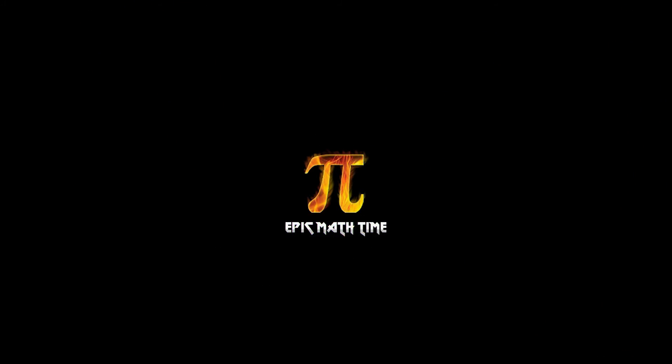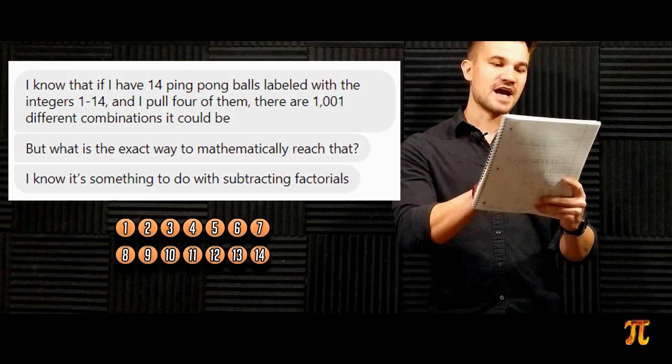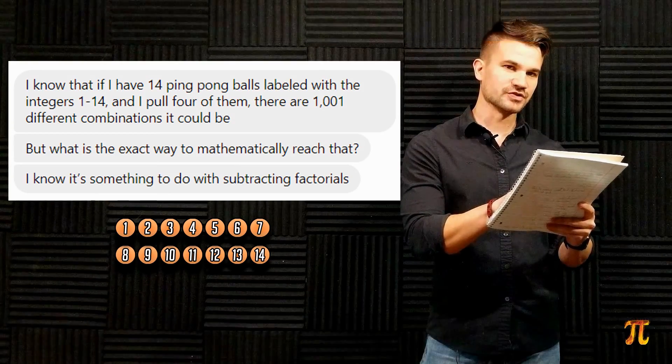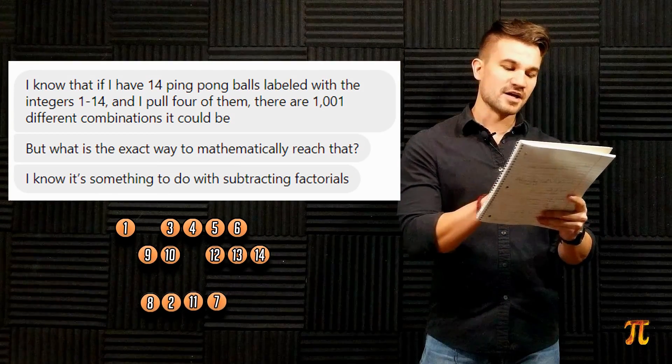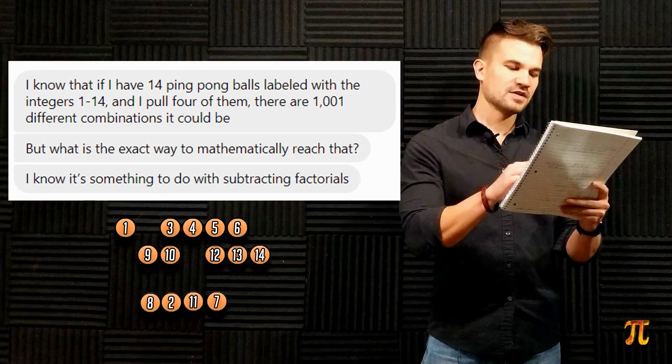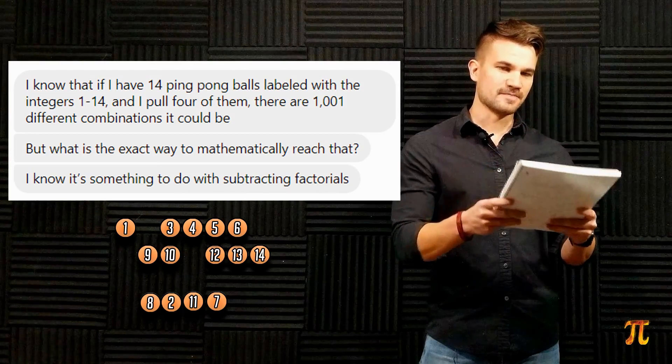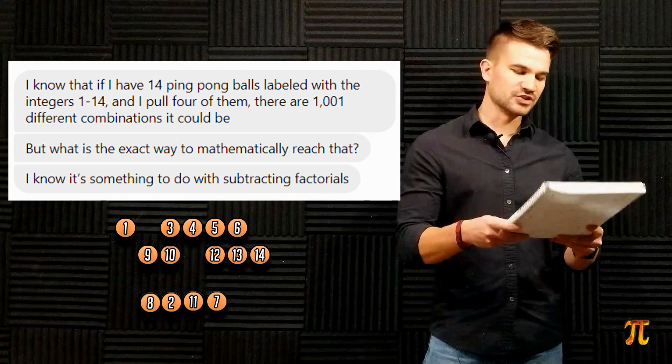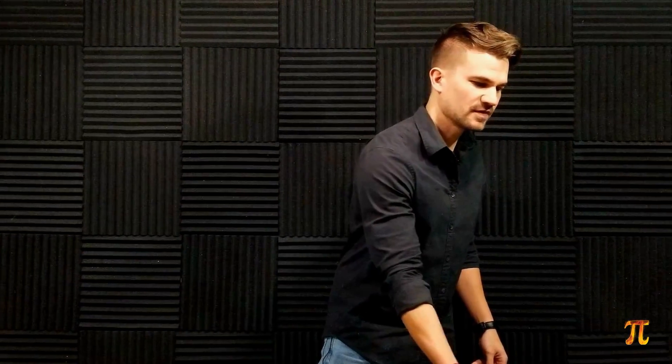A few days ago someone sent me a message on Facebook asking me a math question, and I really liked this question — it made me happy. He said: 'I know that if I have 14 ping pong balls labeled with the integers 1 through 14 and I pull four of them, there are 1001 different combinations. But what is the exact mathematical way to reach that? I know it's something to do with subtracting factorials.'